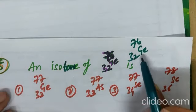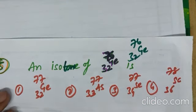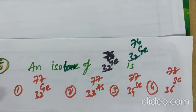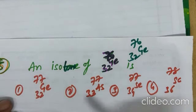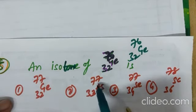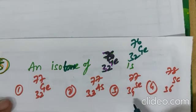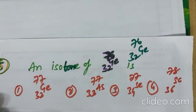Here, 32 germanium 76 contains neutrons, calculate 76 minus 32. 76 minus 32. 44. Among these options, which has 44? 77 minus 33. 77 minus 33. 77 minus 34. 78 minus 36. Which one is equal to the 44? Which one contains similar number of neutrons?